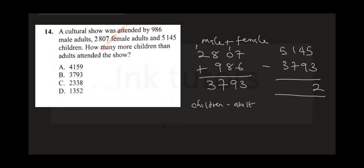4 cannot go, so borrow one — here is 0, put 14. Then borrow again: here is 4 and this is 10. 10 minus 7 is 3, and 4 minus 3 is 1. So the correct answer is D.